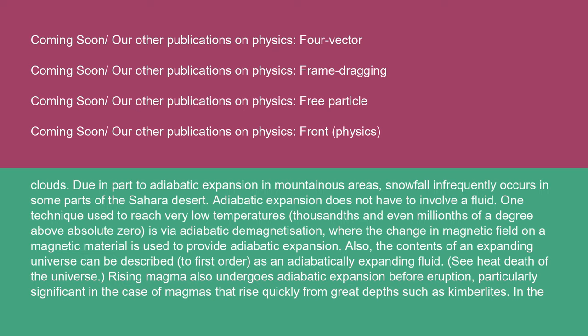Adiabatic expansion does not have to involve a fluid. One technique used to reach very low temperatures — thousands and even millionths of a degree above absolute zero — is via adiabatic demagnetization, where the change in magnetic field on a magnetic material is used to provide adiabatic expansion. Also, the contents of an expanding universe can be described, to first order, as an adiabatically expanding fluid (see heat death of the universe). Rising magma also undergoes adiabatic expansion before eruption, particularly significant in the case of magmas that rise quickly from great depths such as kimberlites.